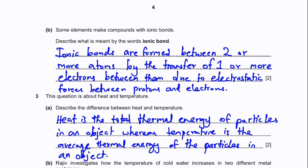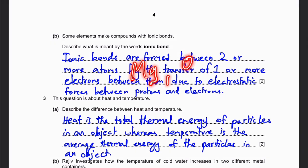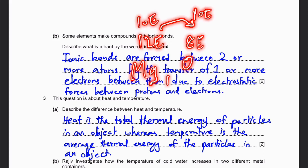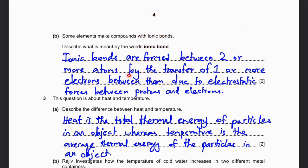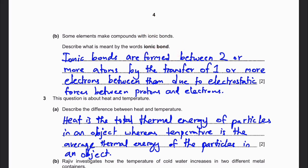Some elements make compounds with ionic bonds. Describe what is meant by an ionic bond. Ionic bonds are formed between two or more atoms by the transfer of one or more electrons between them. For example, magnesium has 12 electrons and oxygen has 8. If you move two electrons from magnesium to oxygen, both will reach a 2, 8 structure, which is stable because the outer shell has 8 electrons. That transfer, driven by electrostatic forces between protons and electrons, is what an ionic bond is.